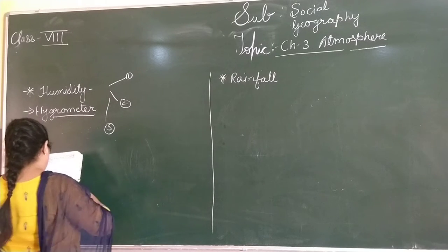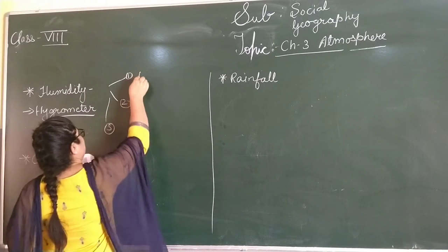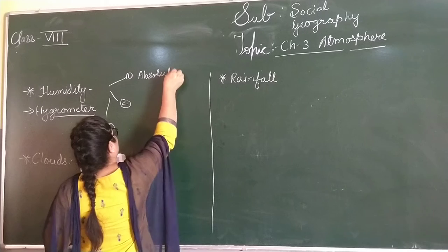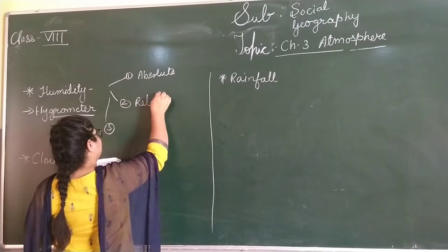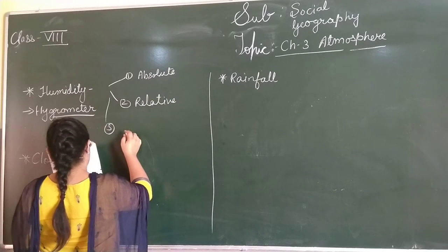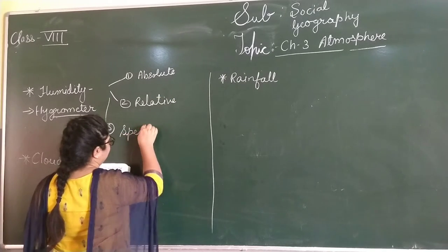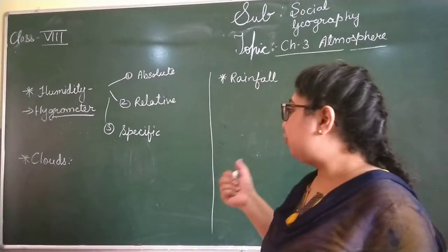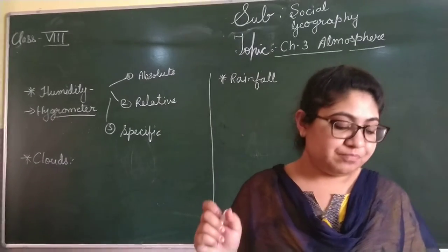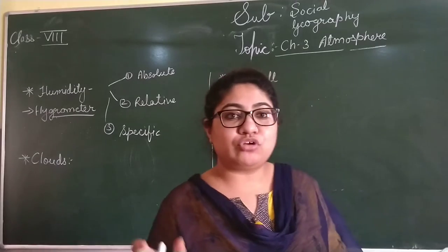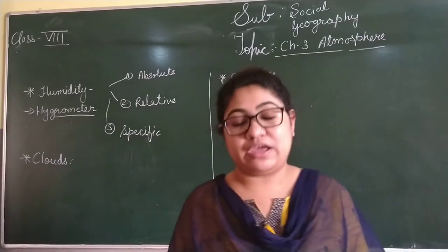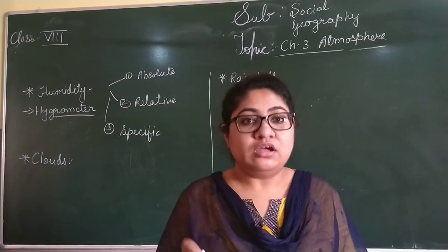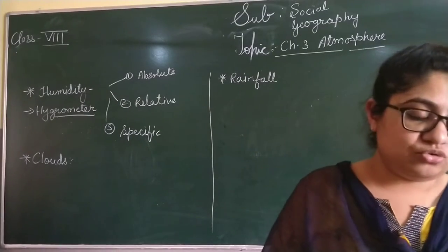The first type of humidity is absolute humidity. The second one is relative humidity. And the third one is specific humidity. Absolute humidity refers to the total amount of water vapour present in a given volume of air. Whatever water vapour is present in that volume of air, that is shown. It does not take temperature into consideration.